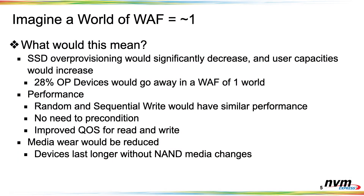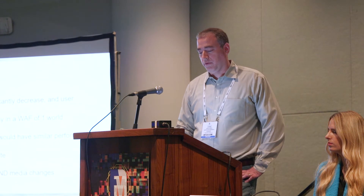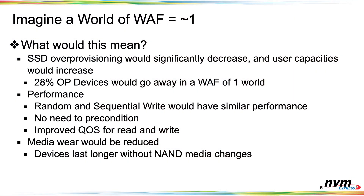If we could get to a WAF of 1.0 across the board, we'd be decreasing over-provisioning and yielding additional bytes per drive. Random and sequential write workloads would have similar performance profiles — today, a random workload has significantly lower throughput than a sequential workload. You'd get the same performance from the first byte to the last byte written to the drive — no preconditioning effect. The QoS of reads and writes would benefit: reads wouldn't be interfered with by writes to the same extent. And media wear would be reduced.